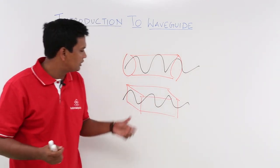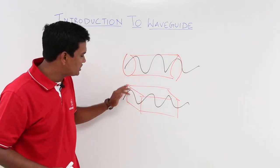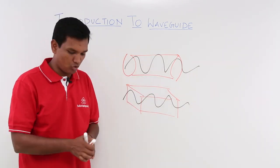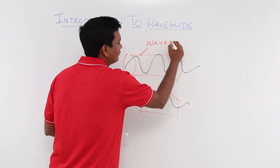You can see that the wave is travelling from one point to another point. This structure over which the wave is travelling inside is what is called a waveguide.